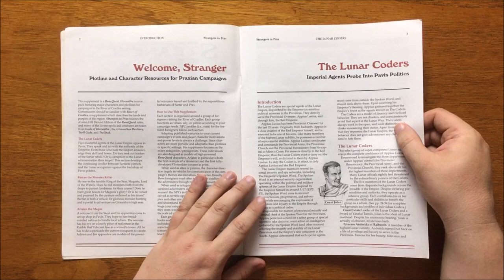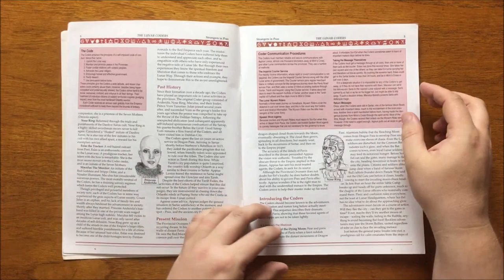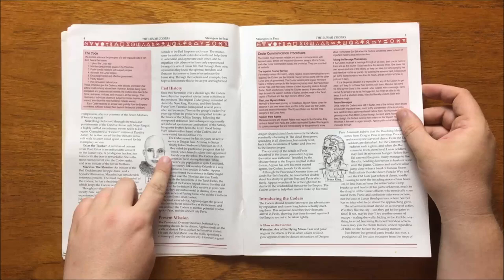They are non-chaotics and always work in the open, identifiable by their distinctive red cloaks. They consist of their leader, Count Julan, a sword of Yannifal Tarnhild and a man of aristocratic bearing, Princess Anderida of Raybanth, a member of highest lunar nobility who turned her back on a life of privilege to save the Emperor, who is a priestess of the Seven Mothers and noticeable for her bald head.